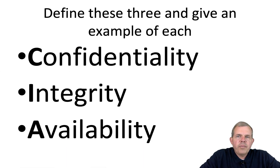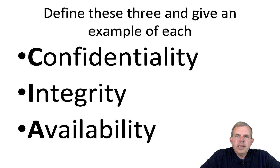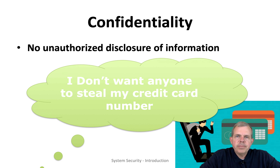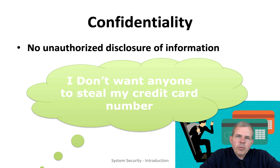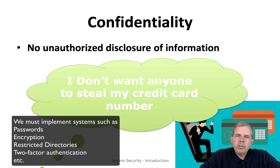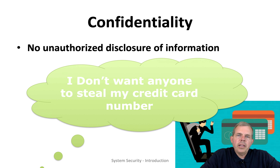The first thing is to define and give an example of each of these terms: confidentiality, integrity, and availability. The idea of confidentiality is that we don't want anyone to see our data who is not allowed to. For example, you probably don't want anyone to steal your credit card number, so a computer system has to rely on the principle of confidentiality in order to be effective. C is for confidentiality.